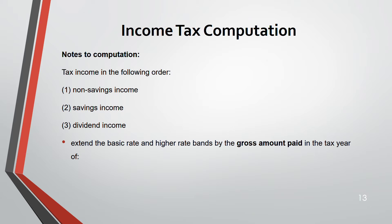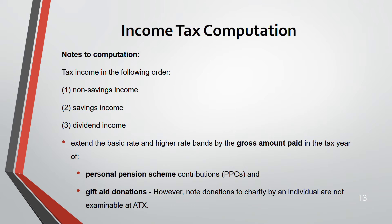Tax income in the following order: first non-savings, second savings, third dividend. This order is most beneficial for tax planning purposes. You can extend the basic and higher rate band — always using the gross amount — when you make personal pension scheme contributions (not occupational) or gift aid donations. Gift aid donations by an individual will not be tested in depth in ATX.